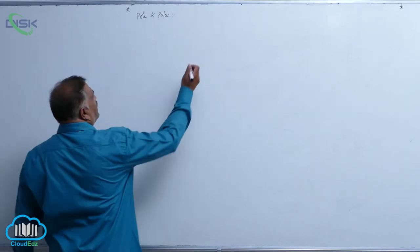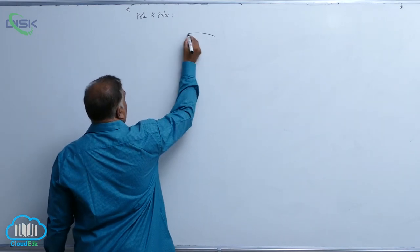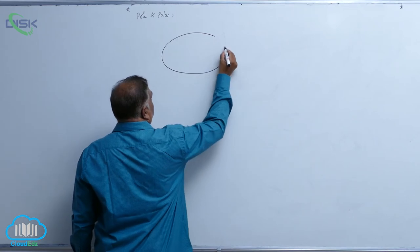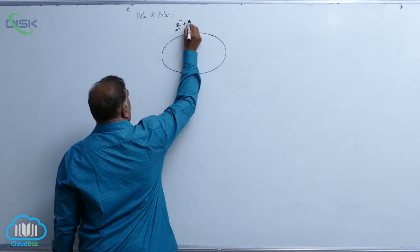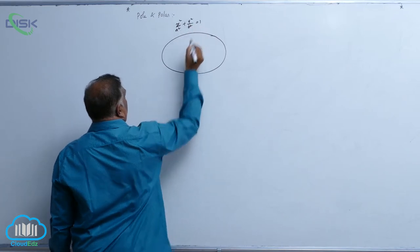Pole and pole arc. Now first consider the standard ellipse equation: x square by a square plus y square by b square equal to 1.